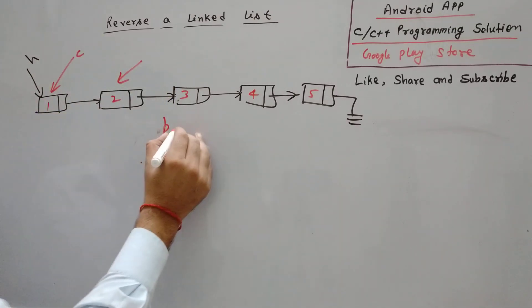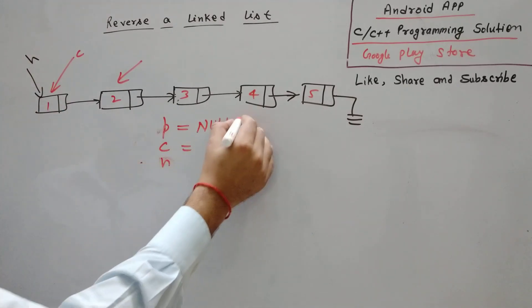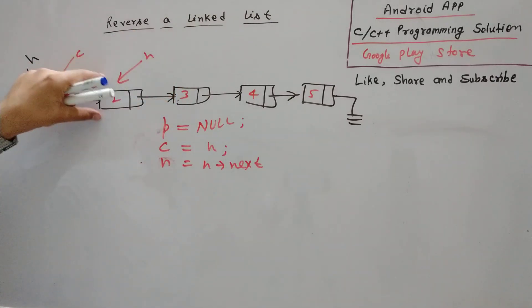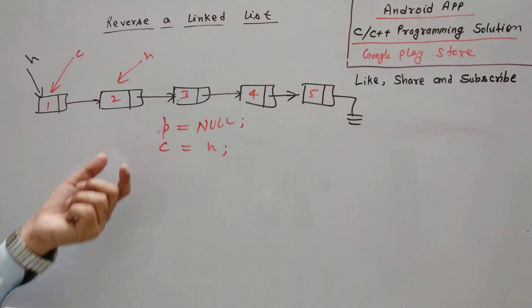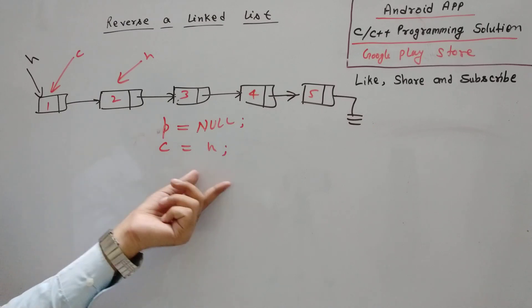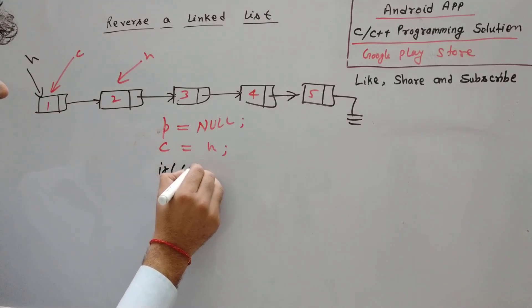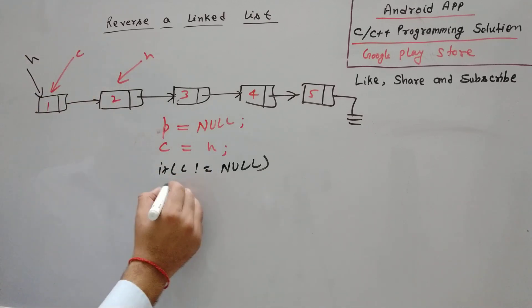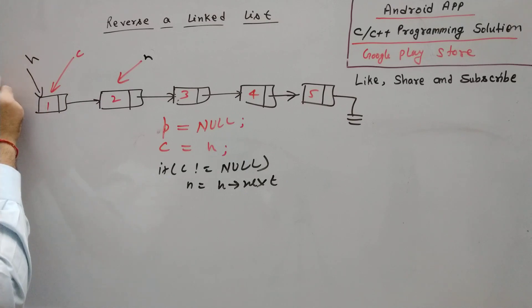Before initializing next, you cannot directly say next equals head-to-next because you don't know whether the node exists or not. You have to check first, otherwise you will get a segmentation fault. If there is only one node and you directly do next equals head-to-next, you will get a segmentation fault. So you have to check: if current is not equal to null, then you can say next equals head-to-next. So next is pointing to the second node and previous is pointing to null.